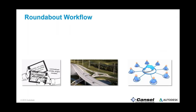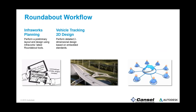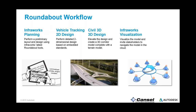Let's talk about the roundabout workflow we're going to discuss today. First, we'll start a model in InfraWorks and do a preliminary design using its roundabout tool. Then we'll take that preliminary design into AutoCAD and do a 2D design using Autodesk Vehicle Tracking tools. We can create Civil 3D objects and make a full corridor using Vehicle Tracking. Once detailed design is complete in Civil 3D, we can take that model back into InfraWorks for further visualization.